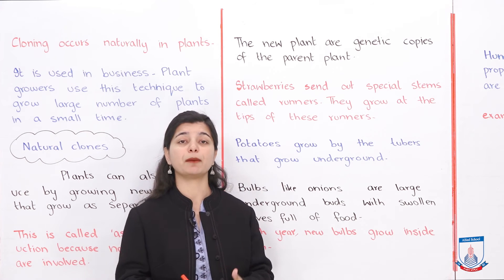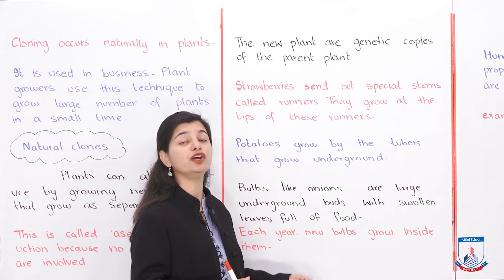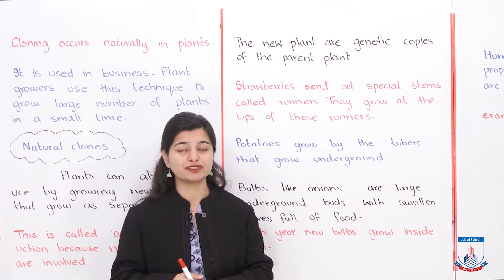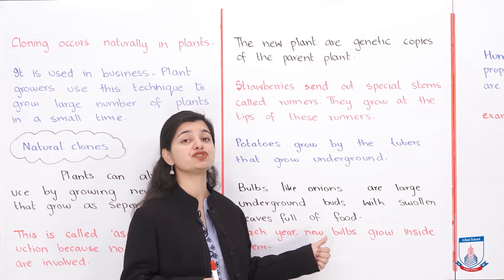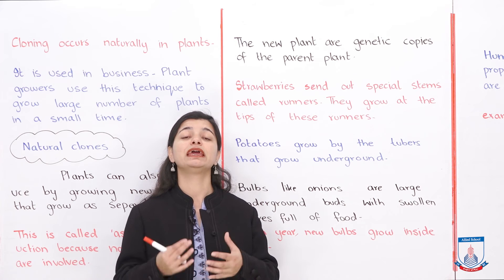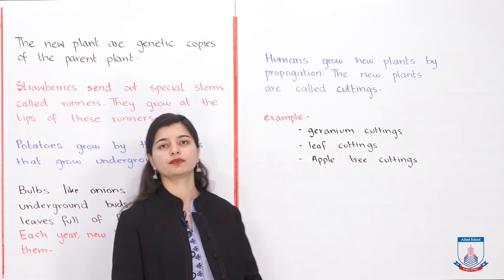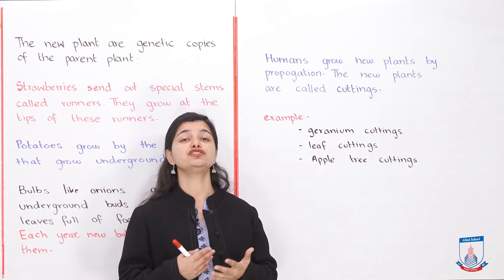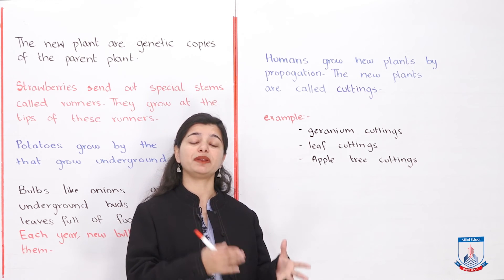These are just a few examples, and what you will notice is that these are non-flowering plants. Flowering plants also reproduce through pollination and germination, but for these plants that is not the case — they reproduce asexually and create identical copies of themselves.